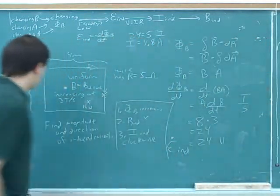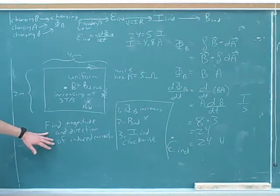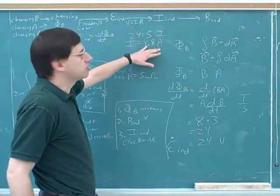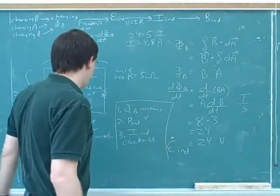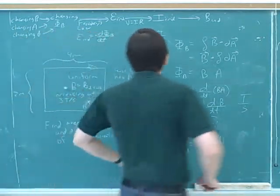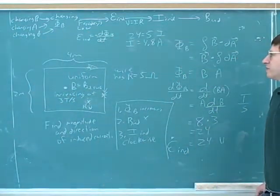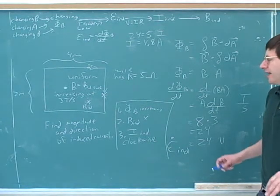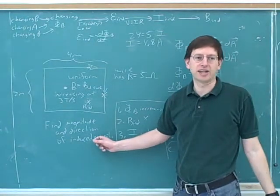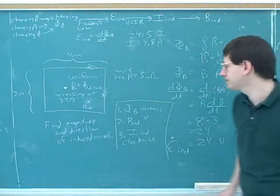So what was the answer? The magnitude and direction of the induced current: the current has a magnitude of 4.8 amps and it's flowing in a clockwise direction. The mathematical concept of current is a scalar so it doesn't have a direction, but we can still talk about which direction the actual current is flowing — and here it's clockwise.